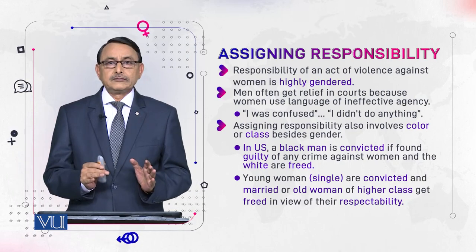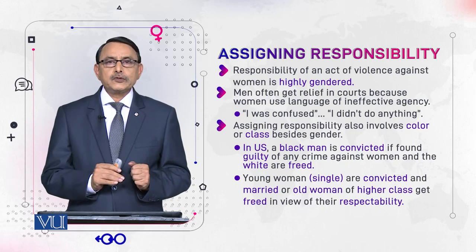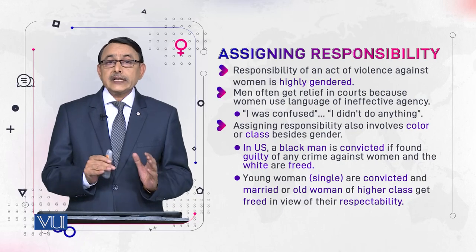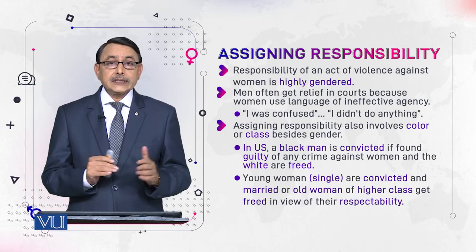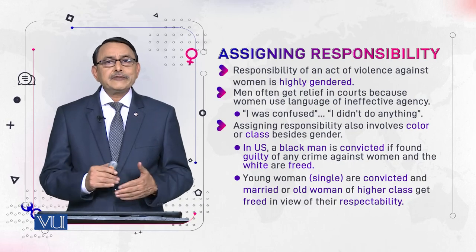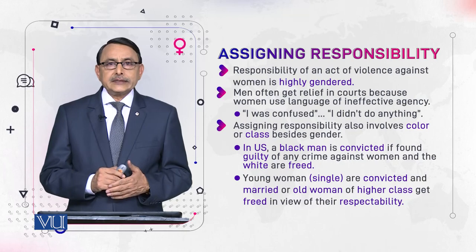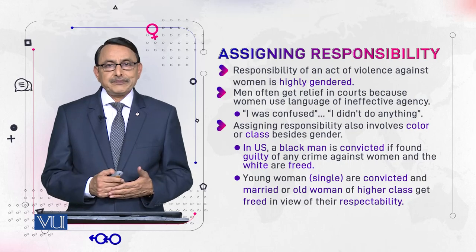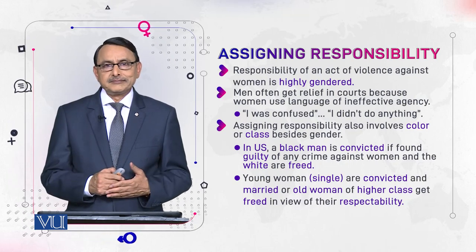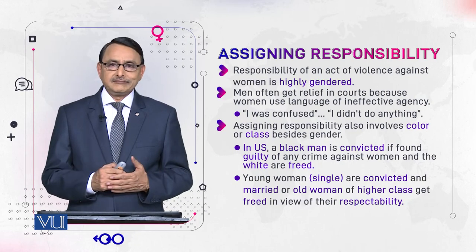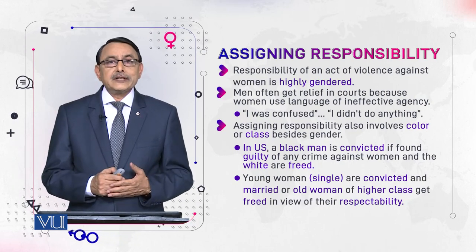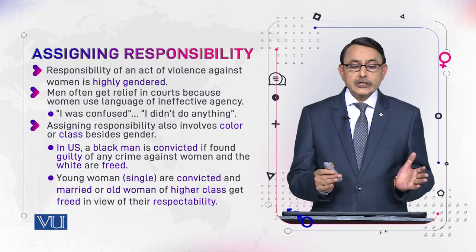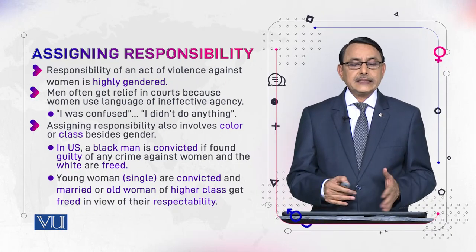When women are in the agent role — as explained in previous modules — their agent role is very ineffective because the language they use is weak. It in fact decreases the intensity of their words. For example: 'I was confused,' 'I didn't do anything.' This is the agency they use in such cases. Assigning responsibility also involves colour or class besides gender.